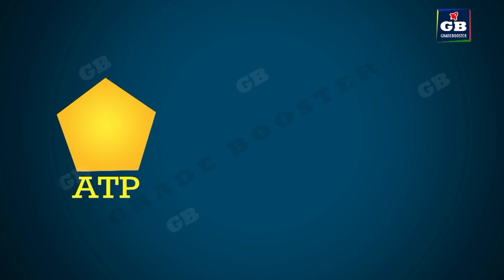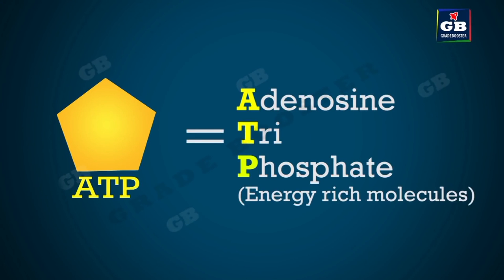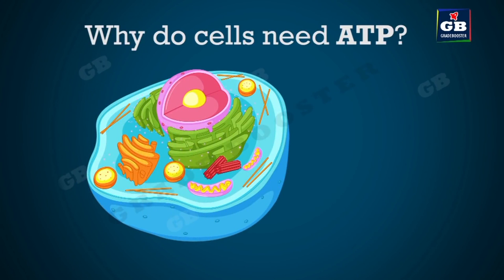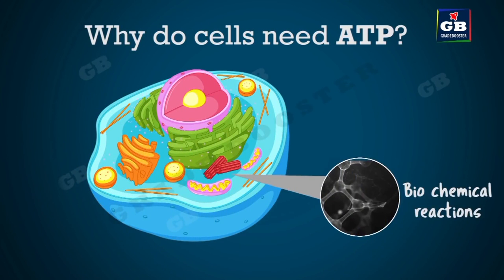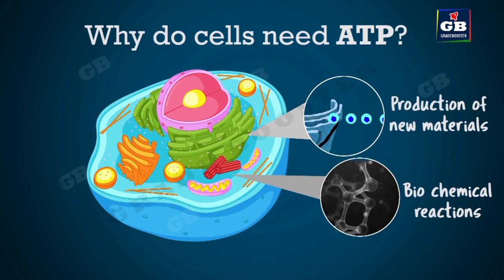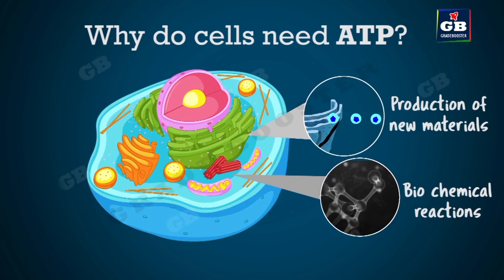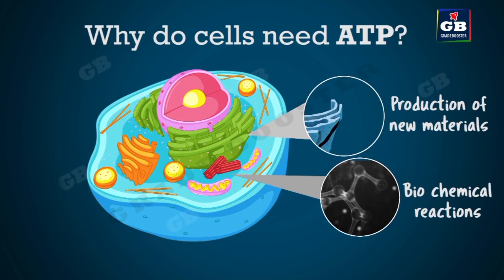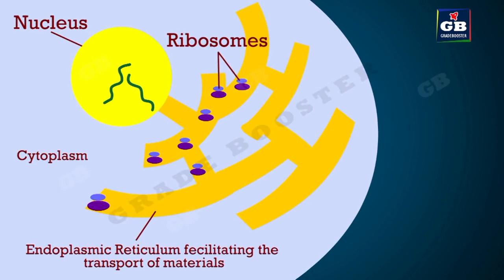ATP (adenosine triphosphate) are energy-rich molecules in our cells. Many reactions in the cell require energy, and the production of new materials also requires ATP. That is why ATP is called the cell currency or energy currency of the cell.